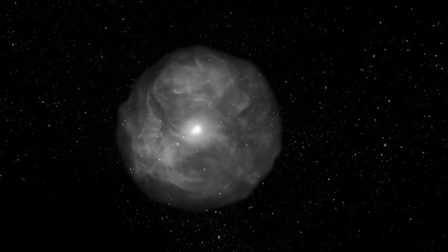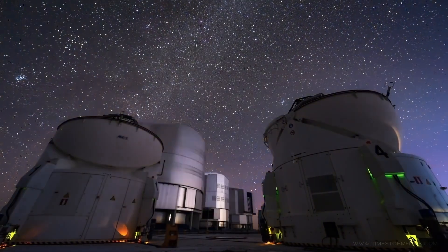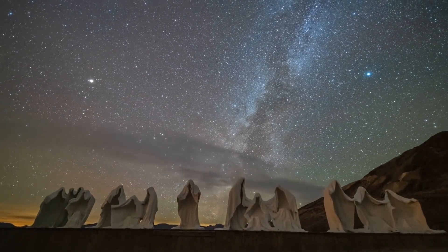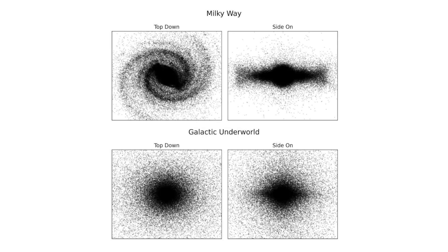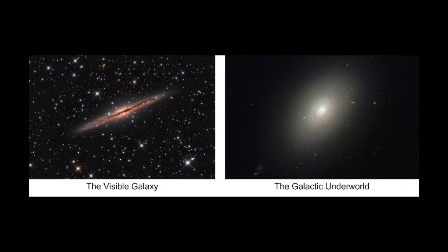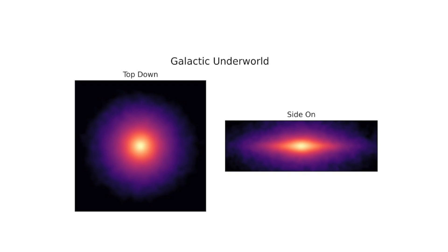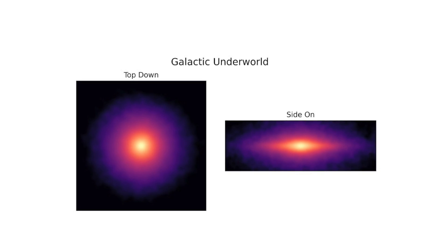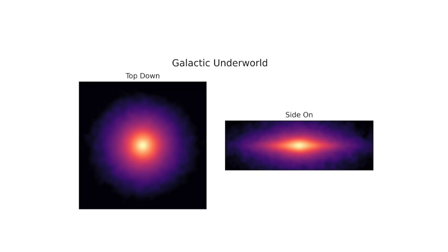They found that the younger, newly formed neutron stars conform much more to the form of today's galaxy, while the ancient neutron stars are still haunting the outer reaches of the graveyard. The galactic underworld actually spans quite a bit larger than the bright star-filled galaxy that we are used to seeing. Neutron stars spread out forming a puffy halo formation surrounding the galaxy that measures roughly three times the height of the Milky Way.